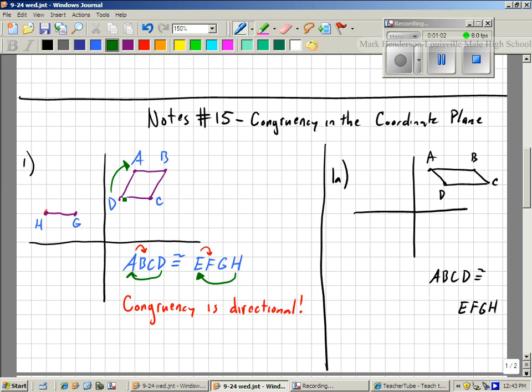So, D goes up to the right one. H goes up to the right one to get to where E is.